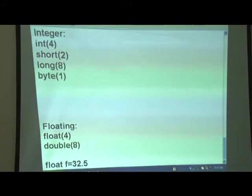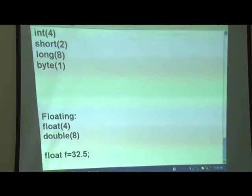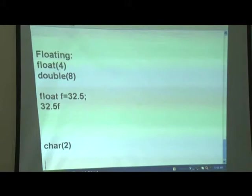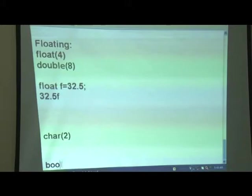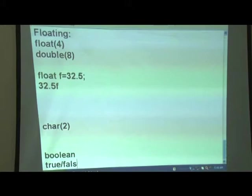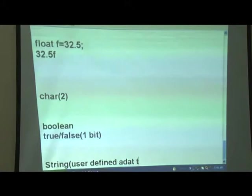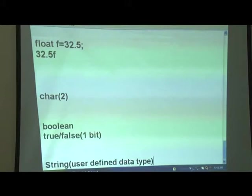If you write float f = 32.5 in Java it is incorrect, because every floating point value is of type double. You must write 32.5f. The character data type has a size of 2 bytes, and every character is stored in the corresponding Unicode format. The boolean data type holds only true or false and has a size of 1 byte. Finally, String is a user-defined data type — a collection of characters enclosed in double quotes — and it is a separate class in Java.